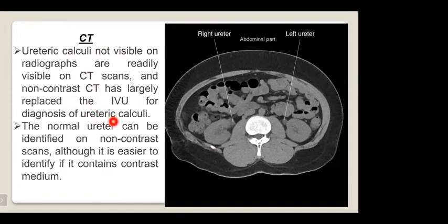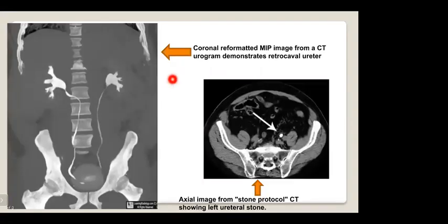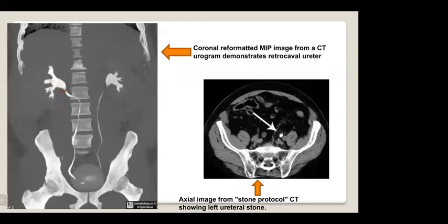The normal ureter can be identified on non-contrast CT although it is easier when containing contrast media. A coronal maximum intensity projection CT urogram can demonstrate a retrocaval ureter — a condition where the ureter courses behind the inferior vena cava, causing obstruction and dilatation of the proximal portion. Axial images from stone protocol CT can show a ureteric stone.